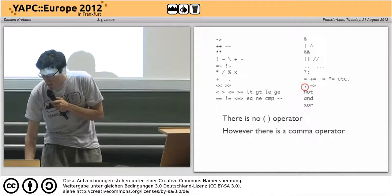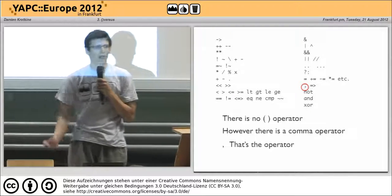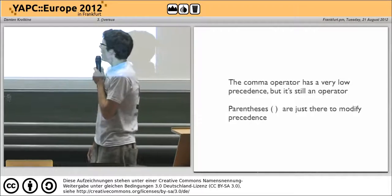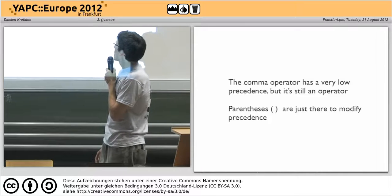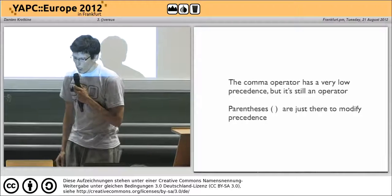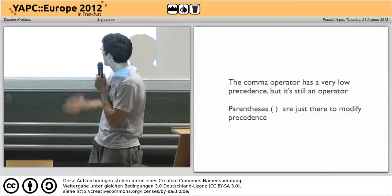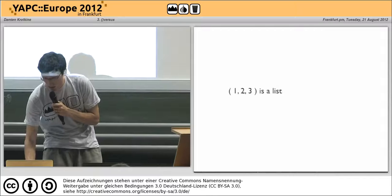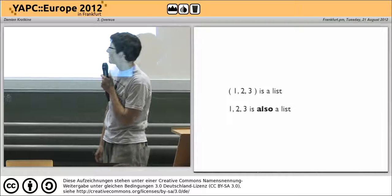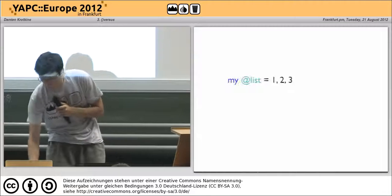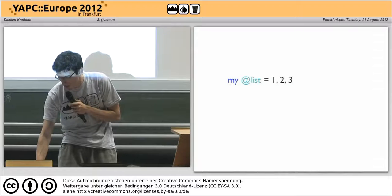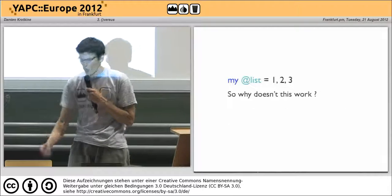However, there is a comma operator. That's the operator. So the comma is the operator for the list. However, the comma operator has a very low precedence, but it's still an operator. So parens are just there to modify precedence. So 1, 2, 3 with the parens is a list, but without the parens it's also a perfectly valid list. So my @array equals 1, comma, 2, comma, 3. So why doesn't this work?